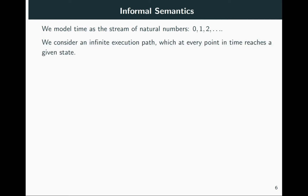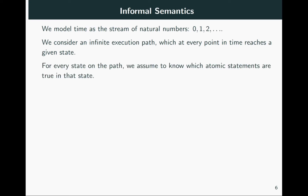To give meaning to LTL formulas, let us consider an infinite execution of some system which, for each point in time, reaches a given state. For every reached state at every point in time, we assume to know which atomic propositions are true. Another way to say this is that we fix a labeling of each state with the atomic propositions that are true in that state. LTL formulas are evaluated along this path — more precisely, for each LTL formula, we are able to state what it means for the formula to hold for this path.